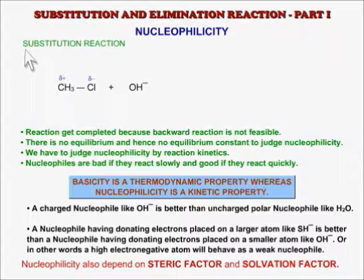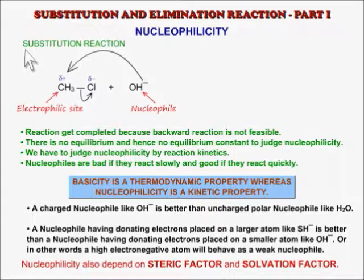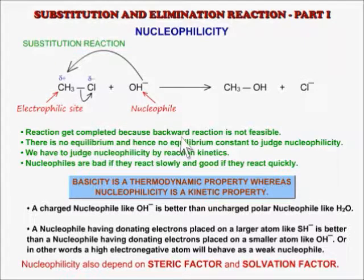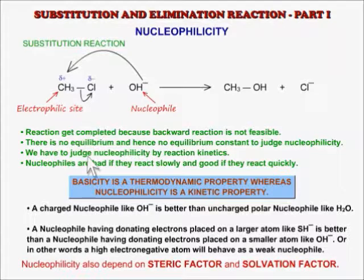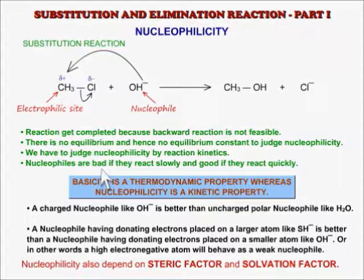Nucleophilicity. In substitution reactions, the nucleophile attacks a carbon atom which is the electrophilic site. This reaction gets completed and there is no equilibrium stage because the backward reaction is not feasible. Since there is no equilibrium constant from which we can judge nucleophilicity — that is, how good the nucleophile is — we are solely dependent on reaction kinetics. A nucleophile which reacts quickly is considered a good nucleophile, and one that reacts slowly is a bad nucleophile. Therefore, nucleophilicity is a kinetic property.